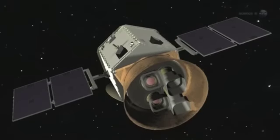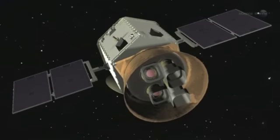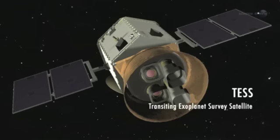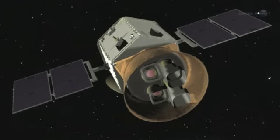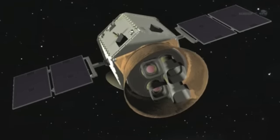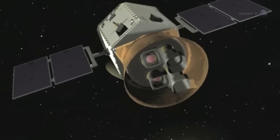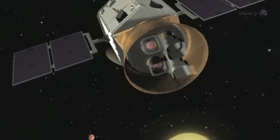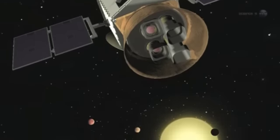NASA is also considering an observatory named TESS, the Transiting Exoplanet Survey Satellite. Supported in part by Google, the MIT-led mission is specifically designed to find exoplanets in the local galactic neighborhood. TESS would study hundreds of stars within 50 light-years of Earth, close enough to study in some detail.